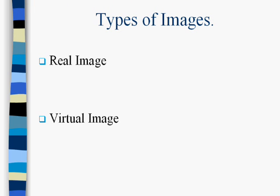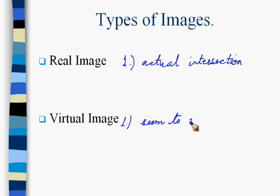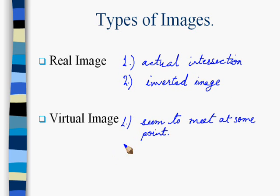Types of images: real image and virtual images. Real image is obtained by the actual convergence or intersection of reflected light. In virtual image, we do not have the actual intersection, but light rays seem to meet at some point. Real images are inverted with respect to the object. Virtual images are always erect images.